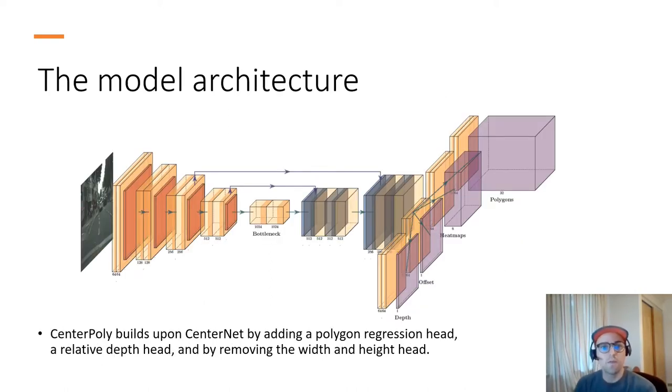So here is an overview of our model architecture. As you can see, we build upon CenterNet by adding a polygon regression head which produces a polygon volume, a relative depth head which produces a single depth value for each location on the feature map, and we also remove the width and height head simply because we no longer produce bounding boxes.